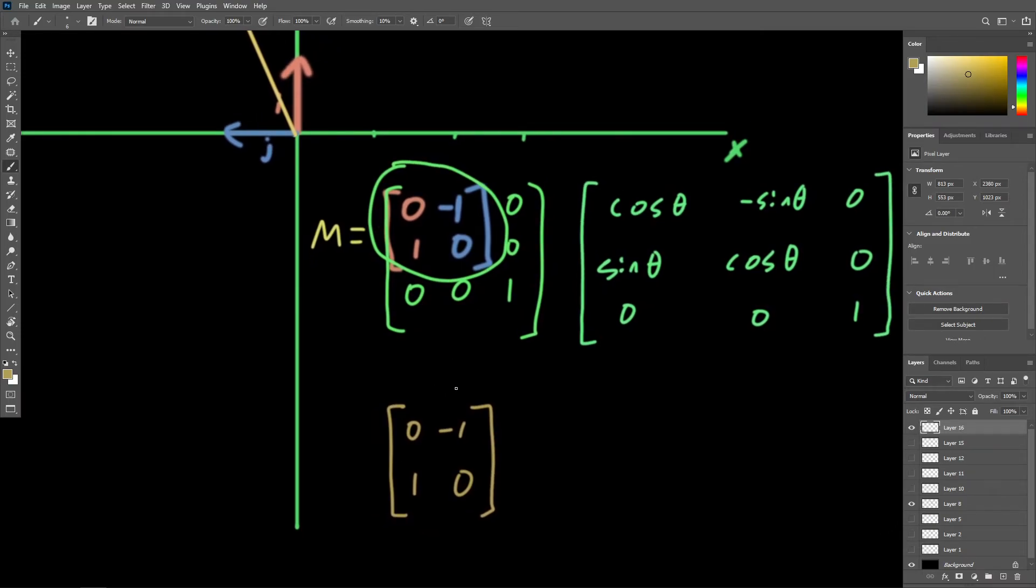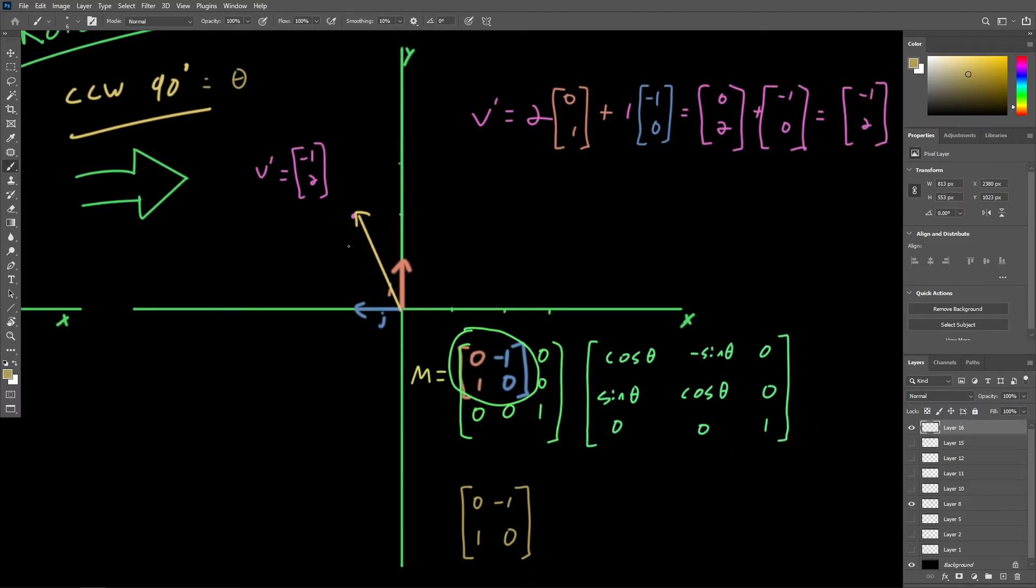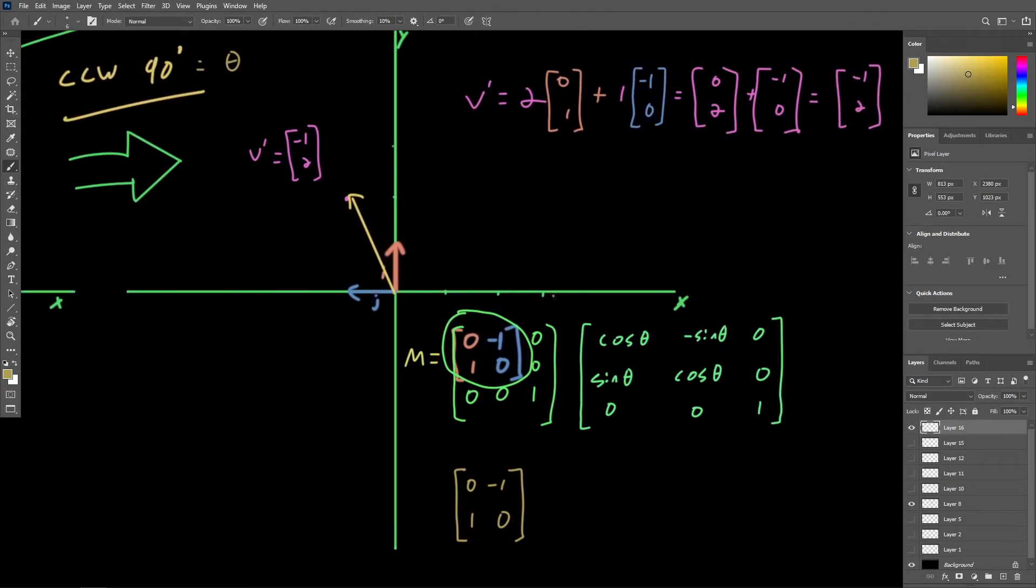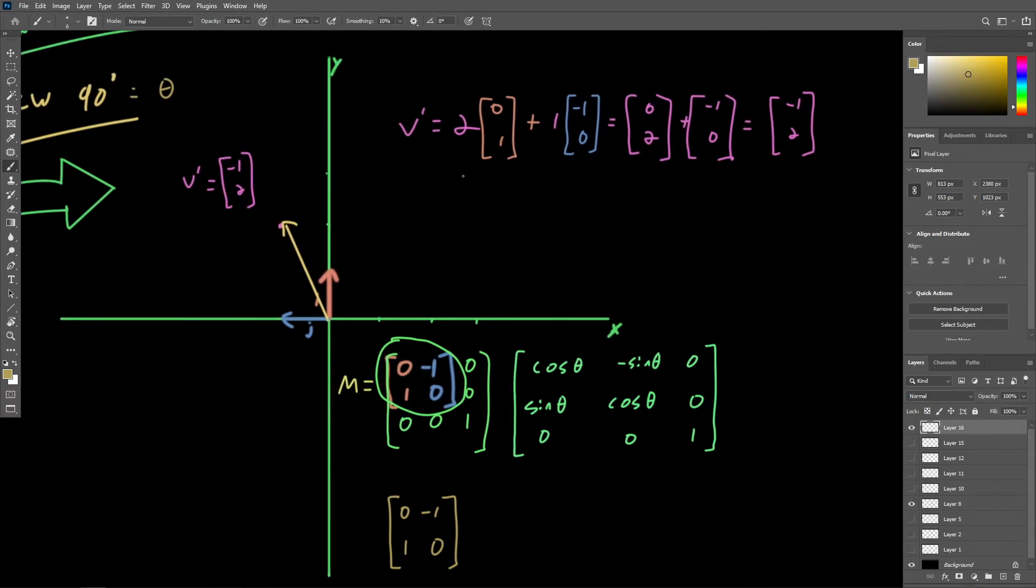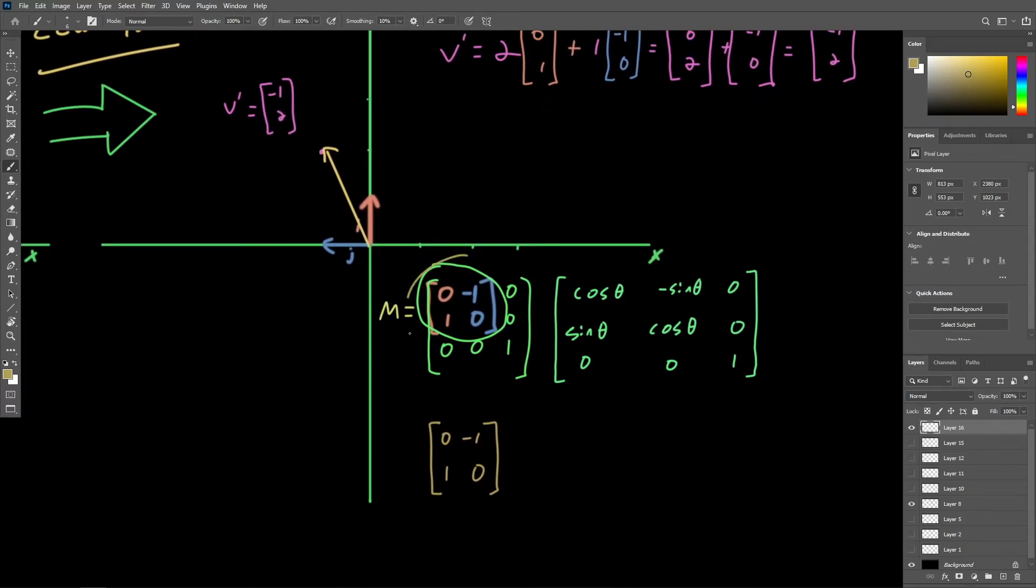This is precisely the same transformation matrix we obtained just when considering what the basis vectors were doing during this counterclockwise 90 degree rotation. So I just wanted to make that connection just to show that even when doing this linear combination here, we're accomplishing the same thing as matrix vector multiplication. And of course we were multiplying by this matrix, which was describing the transformation that we were creating.